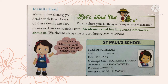Now come to page number 11: identity card. Identity card kise bolte hain? Jo hamari important information carry karta hai. You must have carried an identity card in your UKG classes. Wasn't it fun sharing your details with Riya? Some of these details are also mentioned on your identity card. An identity card has important information about us — we should always carry our identity card to school. Whatever details we shared with Riya — vo saari detail hamare identity card pe bhi hoti hai, jaise name, class, birth date, guardian ka name, ghar ka address, and our mobile number. It also shows which school we go to.